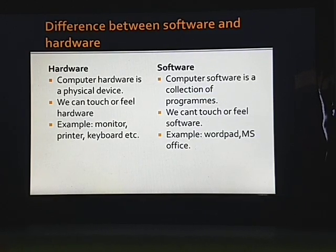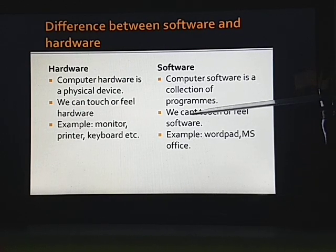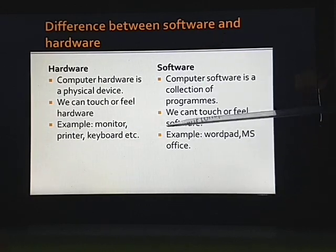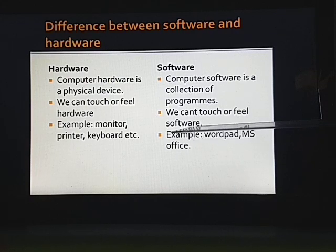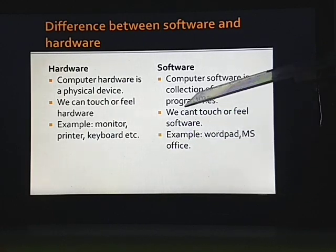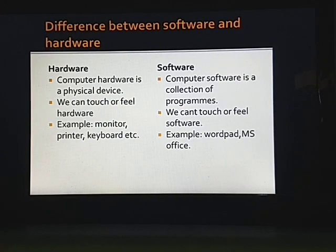Now we will discuss the difference between software and hardware, which you will write in your classwork copy. Computer hardware is a physical device, whereas computer software is a collection of programs. We can touch or feel the hardware, but we cannot touch or feel the software. Examples of hardware: monitor, printer, keyboard, mouse. Examples of software: MS Office, MS Paint — these all are software examples.